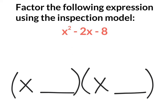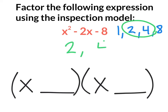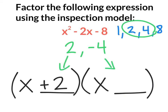Start by listing the factors of 8. We're concerned with 2 and 4 for this example, so I can circle them and write them below. Notice that the two numbers have to multiply to give negative 8 and add to give negative 2, so I'm going to have to add a negative sign in front of the 4. Our numbers now become, in our binomial, x plus 2 multiplied by x minus 4.